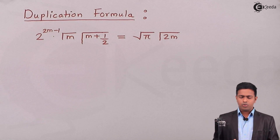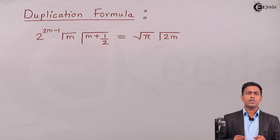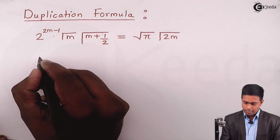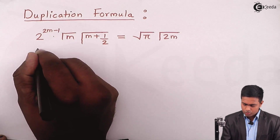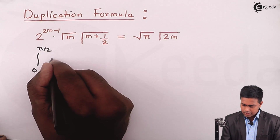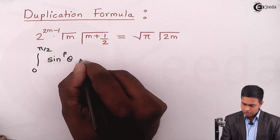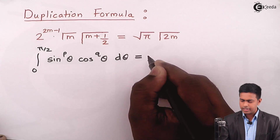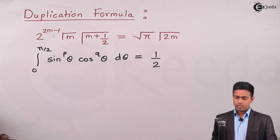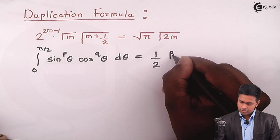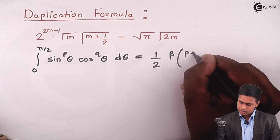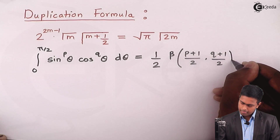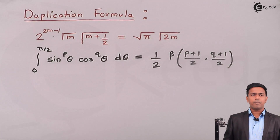To start the derivation, we use the definition of the beta function. The definition states that the integration from 0 to pi by 2 of sin raised to p theta times cos raised to q theta d theta is equal to 1 by 2 times beta of (p plus 1)/2 comma (q plus 1)/2.